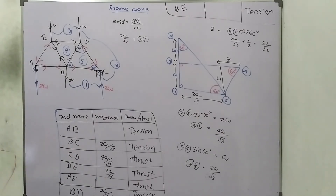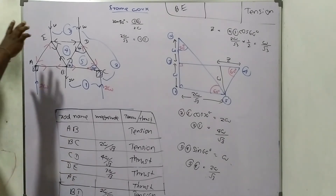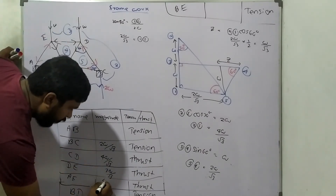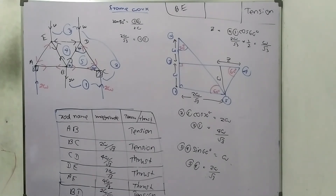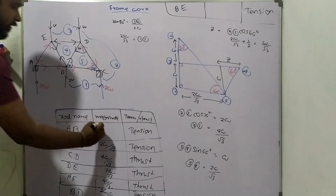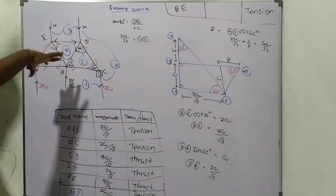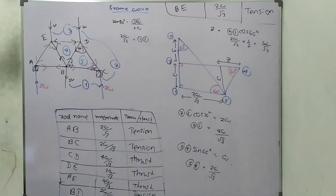The left side is the mirror image of the right side. So AE equals DZ, and AE = DZ = 4W/√3. AB equals BZ = 2W/√3. BE equals BD = 2W/√3. These are all the tensions and thrusts in the given framework.